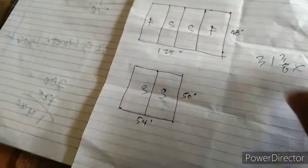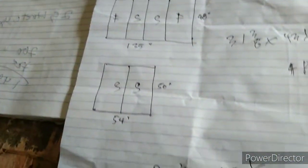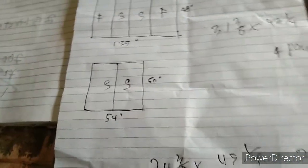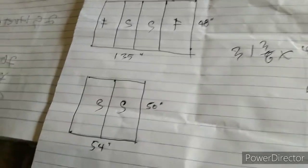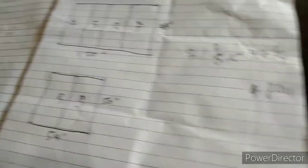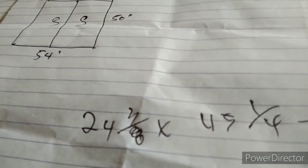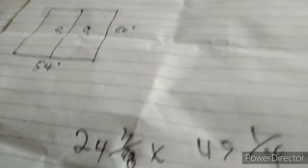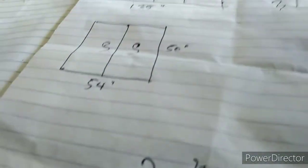Okay, ngayon, guys, alam na natin kung paano kuhanin ang mga sukat ng ating sliding — ang sukat ng ating glass na tatabasin para sa ating sliding window. Ganun lang ka-simple, guys, ang pagkuha ng tamang sukat para sa salamin na ating tatabasin dito sa ating sliding window, kung sakaling wala pa tayong aluminum na aasimbulin.